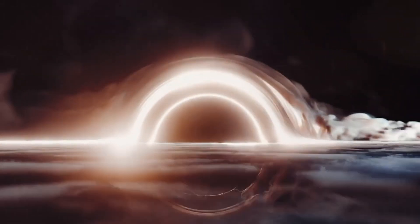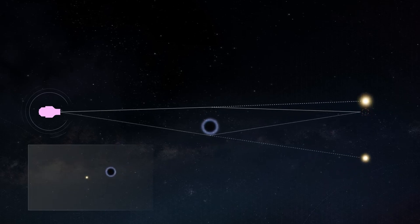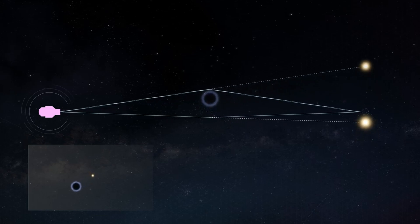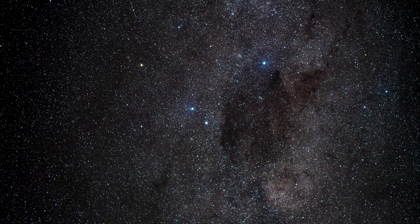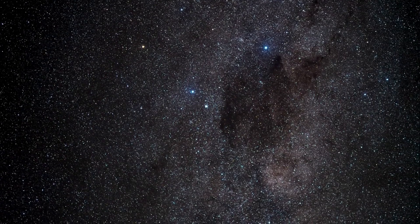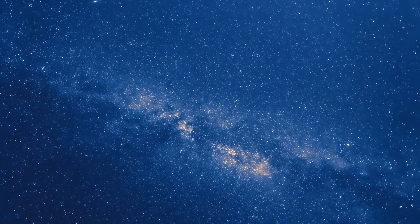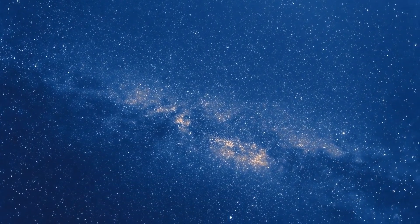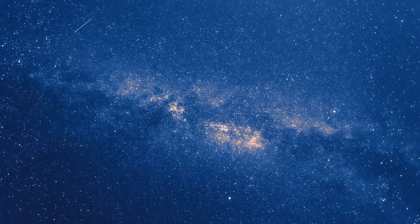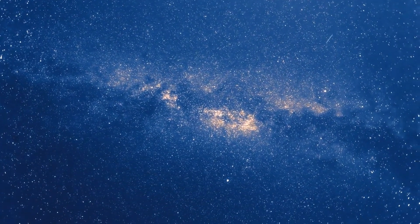Additionally, black holes can be identified by their gravitational effects on nearby stars, causing the stars to orbit in unusual patterns. Despite these methods of detection, the vast majority of black holes remain hidden. This means that one of these elusive objects could, in theory, pass through our solar system without our knowledge. However, this scenario is highly improbable. The distribution of black holes, like that of stars, is vast, and the chances of a black hole entering our solar system are exceedingly slim.